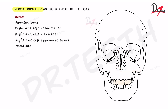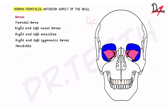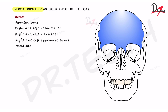Now let's talk about the orbits in detail. Orbits are cavities — holes or cavities in which the eyeballs sit. Each of these cavities has four boundaries: the superior boundary, which is the supraorbital margin; the infraorbital margin; the lateral margin; and the medial margin. The supraorbital margin is formed by the frontal bone.